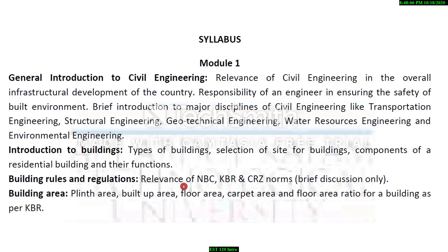We will study the National Building Code, which specifies the criteria to be followed in constructing a building, the Kerala Building Rules specifically for Kerala state, and the CRZ norms — Coastal Regulation Zone norms — applicable for constructions near coastal areas. We will also study building areas such as plinth area, built-up area, floor area, carpet area, and floor area ratio as per the Kerala Building Rules.